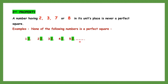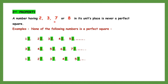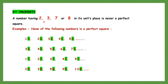If it ends in 3, it's not a perfect square — 33, 43, 53, any number ending in 3 is not a perfect square. Ending in 7: 17, 27, 37, 47, 57 and so on — not a perfect square. And ending in 8: 28, 38, 48, 58 — any number ending in 8 is never a perfect square. So remember: 2, 3, 7, 8 — any number having these in the units place is never a perfect square. This is the second property.